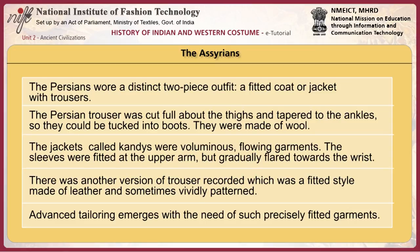The jackets, called candies, were voluminous flowing garments. The sleeves were fitted at the upper arm but gradually flared towards the wrist. There was another version of the trouser — a fitted style made of leather and sometimes vividly patterned. Advanced tailoring emerged with the need for such precisely fitted garments.